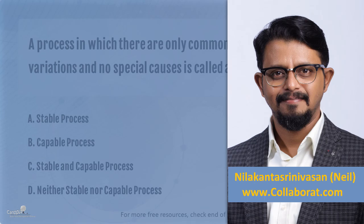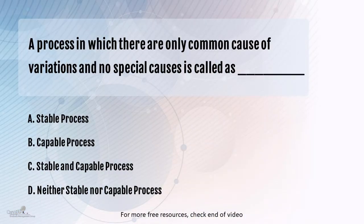The process in which there are only common causes of variation and no special causes is called as: a stable process, a capable process, stable and capable process, and the last option is neither stable nor capable.